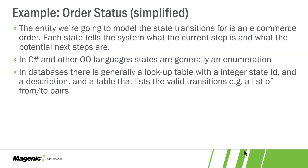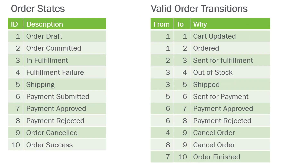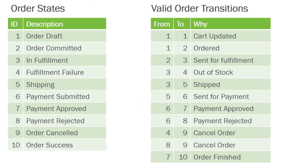We're going to do an e-commerce order example. Generally speaking, the states are generated by an enumeration, or in a database you would have a set of states represented in a table. Here's the database view — the order states table is just a list of all the order states that an order entity can be in.